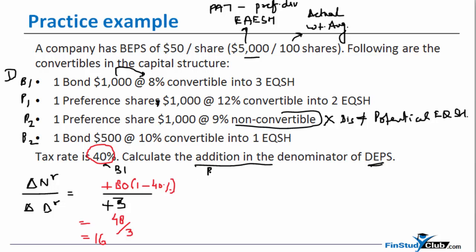Let's do it for P1. Now this time you lead the way. How much is the addition to the denominator if the convertible that we're looking at, this preference here, would get converted into equity in the current year itself?